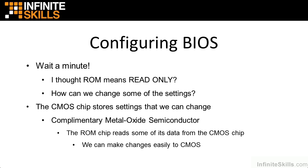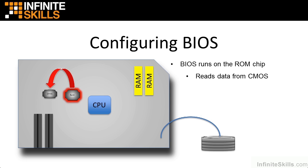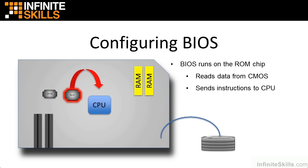So we have changed the BIOS — we just didn't change it on the read-only chip. In this diagram, the BIOS runs on the ROM chip. When we start the computer up, BIOS begins to run and lets the CPU know what's out there. One of the first things it does is read data from the CMOS chip. Once it has that data, it passes all the information to the CPU, which then starts the machine up knowing about its memory, disk, expansion slots, and so on.